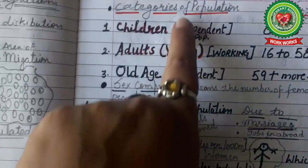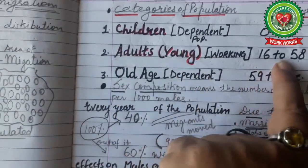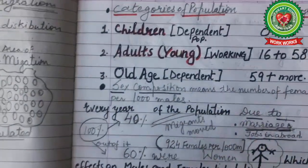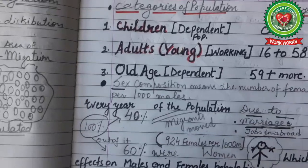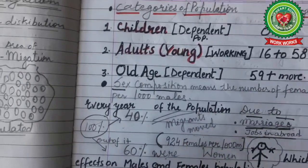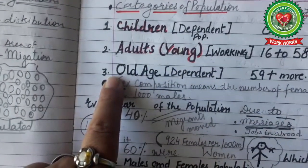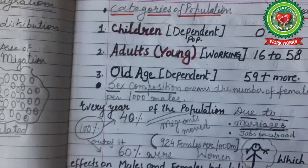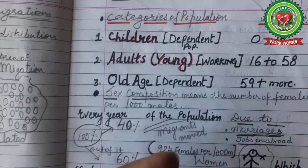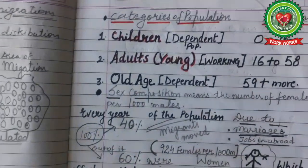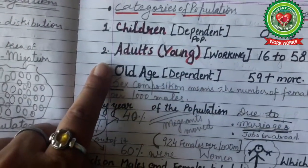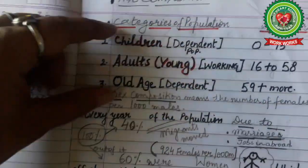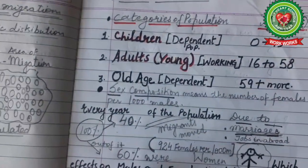Children and old age come under dependent population. Only the 16 to 58 age group people are working and migrate to other countries for their betterment — for earning a livelihood, for better jobs, for higher studies, etc. So what is left behind? Children and old age people are left behind. For example, in Punjab, maximum people are attracted toward developed nations for higher studies and good jobs, and they settle there. The dependent population — children and old age — are left behind, which shows a disturbance of age composition due to migration.